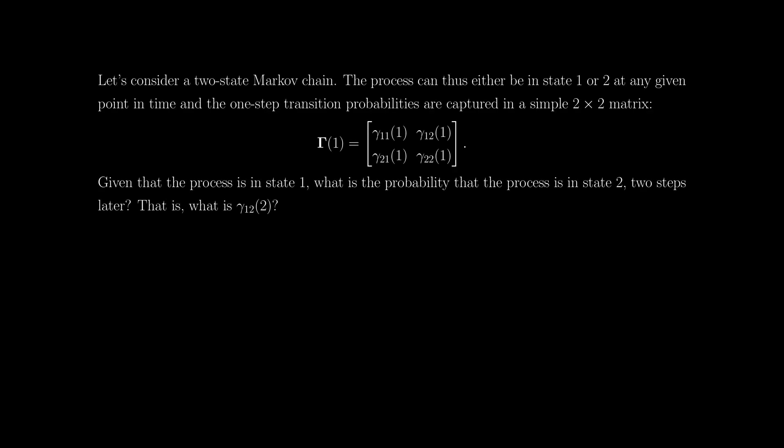To see how these calculations work for deriving the t-step transition probabilities from one-step transition probabilities, it's probably best to start with a simple example and some basic probability theory. So let's consider a simple two-state Markov chain. The process can thus either be in one of two states — state one or state two — at any given point in time, and the one-step transition probabilities are captured in a simple two-by-two matrix.